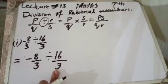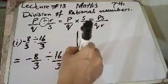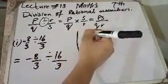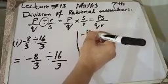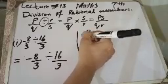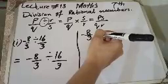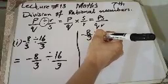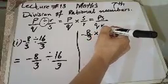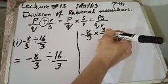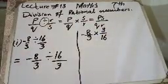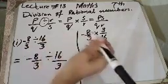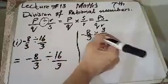अब इसके step पे क्या करेंगे? हम जगें तब्दील कर देंगे। Multiplicative inverse की rule को सामने रखते हुए पहले को इसी तरह रहने देंगे: 8 over 3. Division multiplication में change हो जाएगी, और 3 over 16. Sign और जगह तब्दील करने से अब आप देख सकते हैं, इस sign से divide कर सकते हैं।